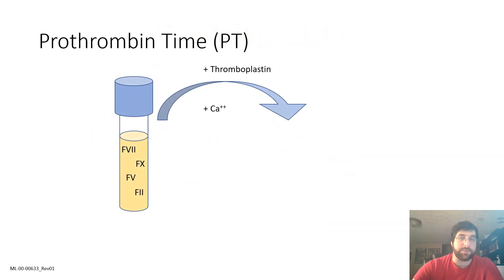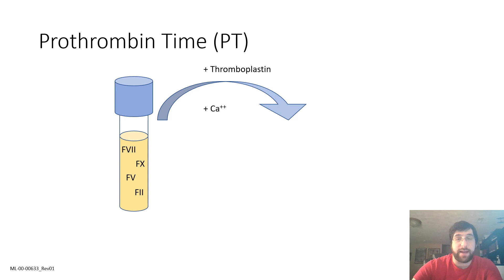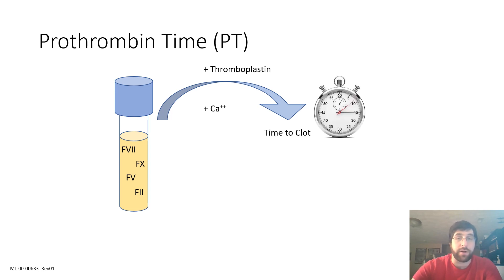Now, there are multiple ways of testing for the global coagulation cascade. First, the prothrombin time or PT test monitors the enzymes and cofactors involved in the tissue factor pathway — the extrinsic pathway. In this assay, citrate anticoagulated blood is mixed with calcium ions and thromboplastin, which is a fancy name for phospholipid vesicles and tissue factor. The time to initial clot formation is then recorded, typically taking between 12 and 13 seconds, though this can vary by lab, equipment, and reagents used.